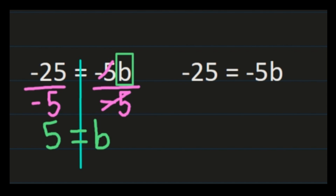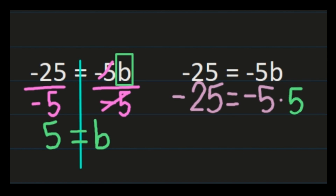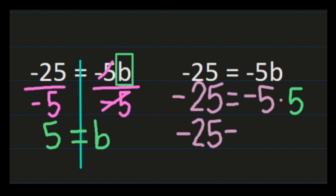We can check: substitute b equals 5 back into negative 25 equals negative 5b. We get negative 25 equals negative 5 times 5. Applying integer rules: a negative times a positive is a negative, and 5 times 5 is 25. So we get negative 25 equals negative 25, confirming our answer.